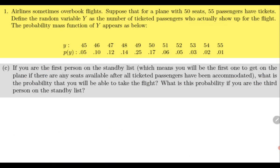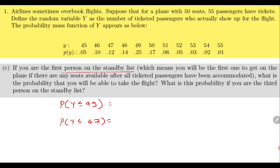The next part says that if you are the first person on the standby list, what is the probability you will be able to take the flight? You can take the flight only if there are vacant seats, and you need only one vacant seat. So if at most 49 passengers show up, you will get a seat. We need to compute P(Y ≤ 49). Similarly, if you are the third person on the standby list, you compute P(Y ≤ 47). We have already seen how to compute these — straightforward computation.